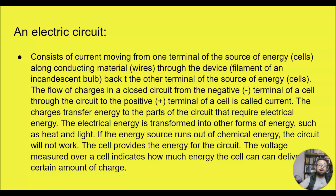The charges transfer energy to the parts of the circuit that require electrical energy. The electrical energy is transformed into other forms of energy such as heat and light. If the energy source runs out of chemical energy, the circuit will not work. The cell provides the energy for the circuit.